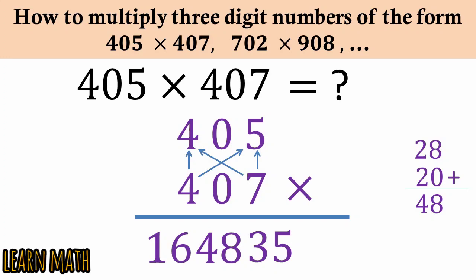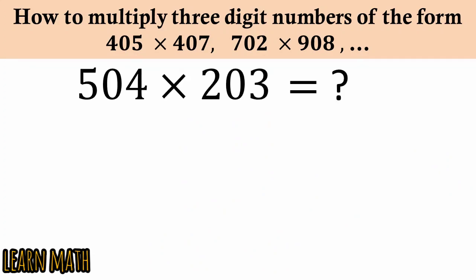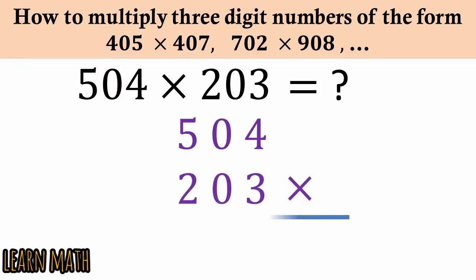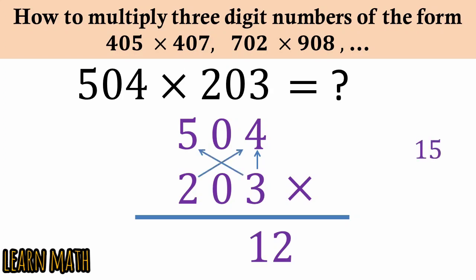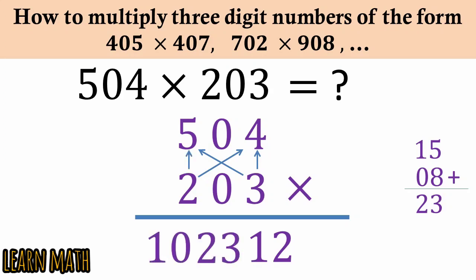The next example is 504 multiplied by 203: 3 into 4 is 12, then 3 into 5 is 15 and 2 into 4 is 8, giving 23. Write 23 here. Then 2 into 5 is 10 — so 102312 is the answer.